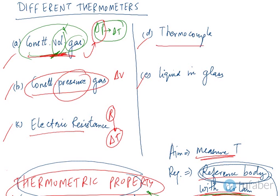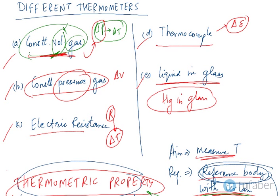The thermocouple indicates a change in the EMF across the junction. For the liquid-in-glass thermometer — which is the mercury-in-glass thermometer we just studied — the thermometric property is the change in height of the mercury column. This is a short summary of the various thermometers we use and the thermometric properties that are used to indicate a change in temperature.